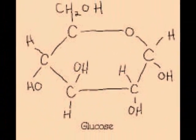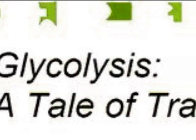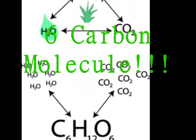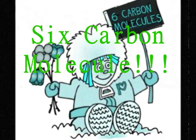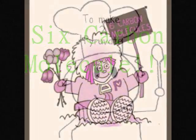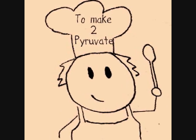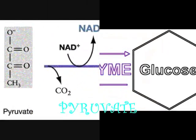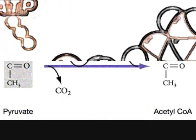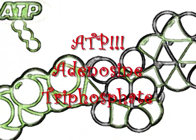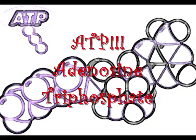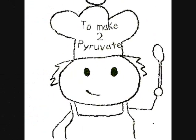Glucose is used in glycolysis — it has 6-carbon molecules — 6-carbon molecules to make 2-pyruvate. What do we use to turn glucose into 2-pyruvate? We use ATP, we use ATP.